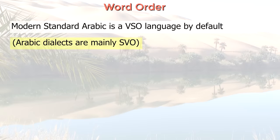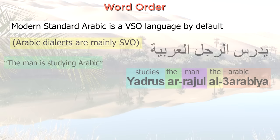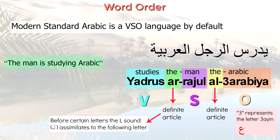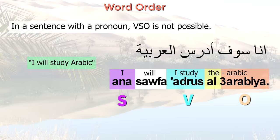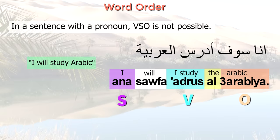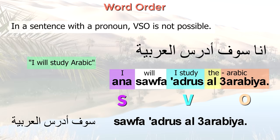Modern Standard Arabic is a VSO language by default, as opposed to Arabic dialects which are mainly SVO. So the verb comes first, followed by the subject and the object. SVO order is also possible. In a sentence with a pronoun subject, VSO is not possible — you either say it with the pronoun first, or omit the pronoun entirely, since the verb conjugation already indicates person.